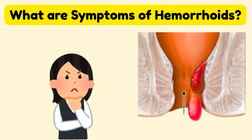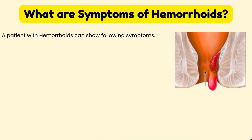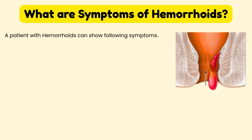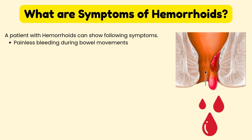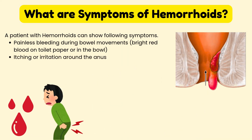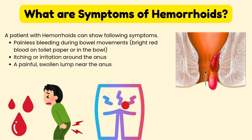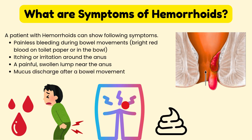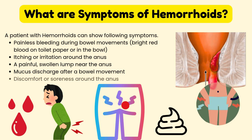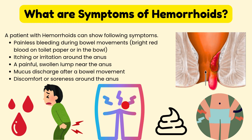What are symptoms of hemorrhoids? Patients with hemorrhoids can show the following symptoms: painless bleeding during bowel movements with bright red blood on toilet paper or in the bowl, itching or irritation around the anus, a painful swollen lump near the anus, mucus discharge after a bowel movement, and discomfort or soreness around the anus.